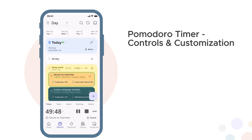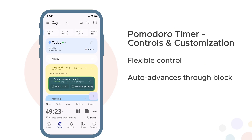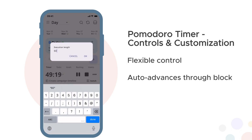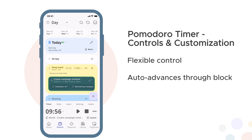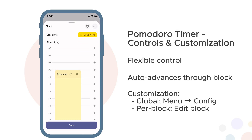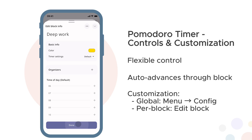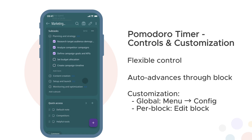Pomodoro timer controls and customization. During a session you can pause and resume. When you mark a session done, the timer switches to the next session in that block. Tap the timer display to edit durations. The menu button offers more options: take a break, add 10 minutes, clear the time limit for elapsed mode, edit starting time, switch targets, or open full config. For customization, tap the menu button then config to customize the global default. You can also customize per block. All timer sessions are automatically logged — view time spent in statistics by objective or time block.